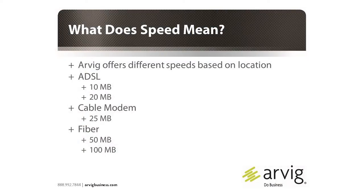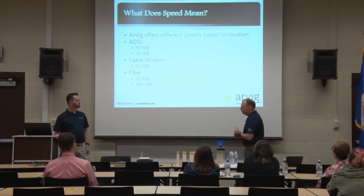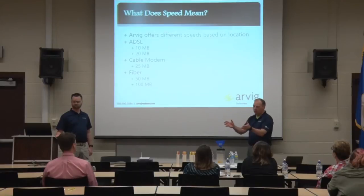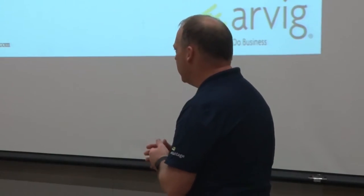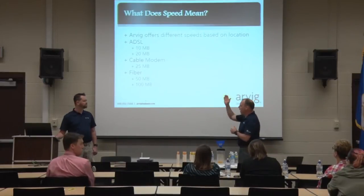With ARVIG, the speeds you get depend on where you live because of technologies available in different communities. Generally speaking — and I stress generalized because every location is slightly different — on DSL you're looking at 10 to 20 meg. Cable modems are around 25, with many now going up to 50. Fiber is anywhere from 50 meg to 100 meg. And in Melrose, we actually have the capability of doing gigabit — that's 1,000 megabits per second, so 1,000 meg instead of 100 meg. Most residential connections are somewhere between 10 and 50.